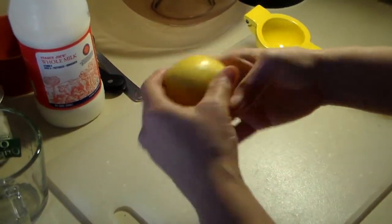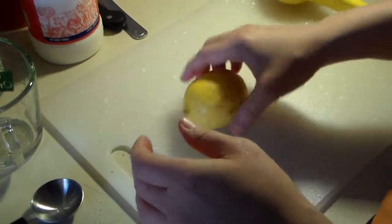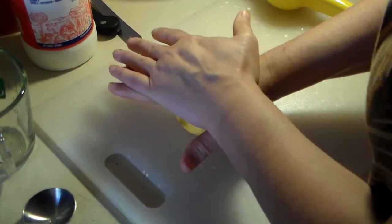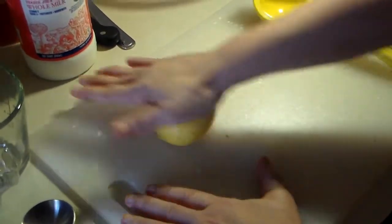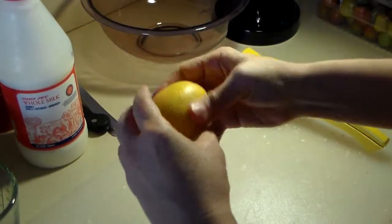All right, so we're going to try to make some homemade buttermilk. The first thing we want to do is get a lemon and kind of roll it, put a little pressure on it, because you want to get the juices going.